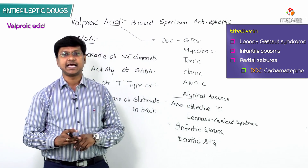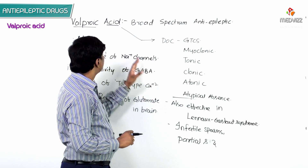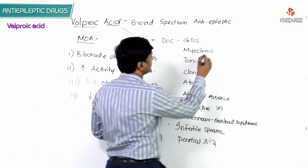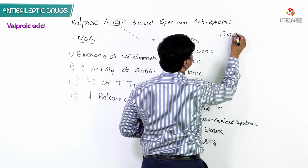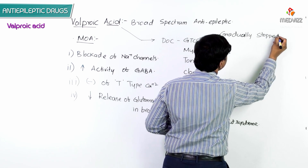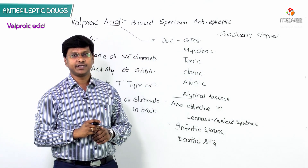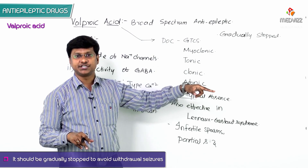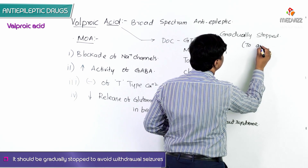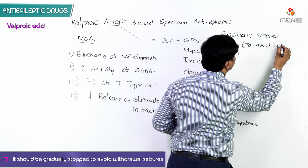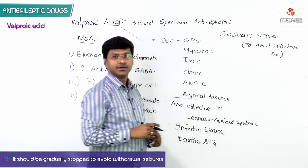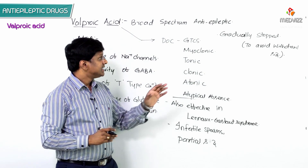Once valproic acid has been started in a patient, it should be gradually stopped — not abruptly — in order to avoid withdrawal seizures.